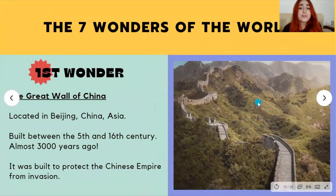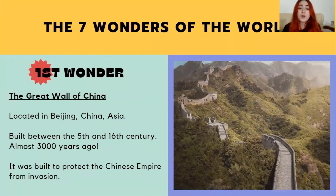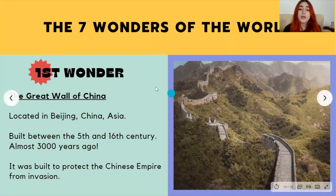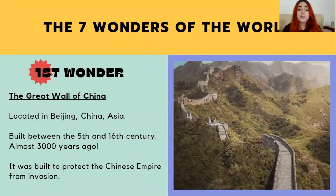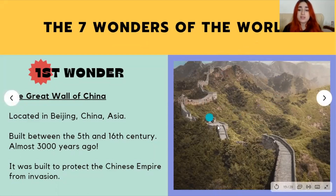Now let's learn about the Seven Wonders of the World. I sure hope you guys get to visit some of these places someday. The first wonder of the world is the Great Wall of China, located in Beijing, Asia. It was built almost 3000 years ago and was built to protect the Chinese empire from invasion. As you can see in this picture, it is truly a sight to see.